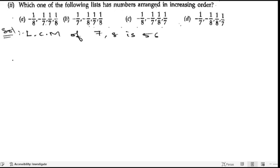Now we need to write their equivalent fractions. Suppose if we are having -1/8, so first we will make -1/8 with the denominator 56, so multiply by 7/7. 7 ones are 7, 7 eights are 56.